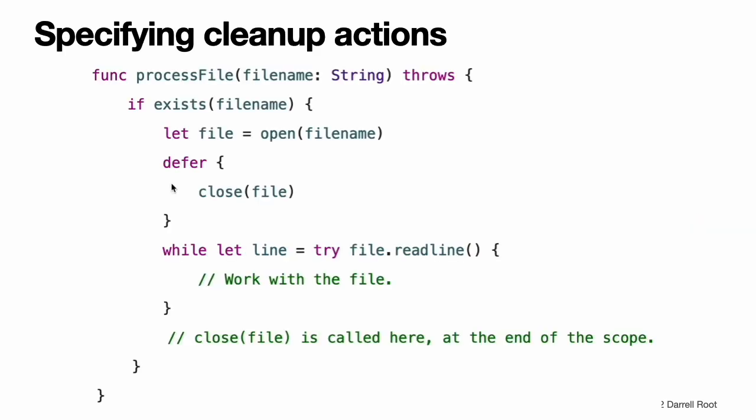Specifying Cleanup Actions. You use a defer statement to execute a set of statements just after code execution leaves the current block of code. This statement lets you do any necessary cleanup that should be performed regardless of how execution leaves the current block of code, whether it leaves because an error was thrown or because of a statement such as return or break. For example, you can use a defer statement to ensure that file descriptors are closed and manually allocated memory is freed. A defer statement defers execution until the current scope is exited. This statement consists of the defer keyword and the statements to be executed later. The deferred statements may not contain any code that would transfer control out of the statements, such as a break or return statement, or by throwing an error.